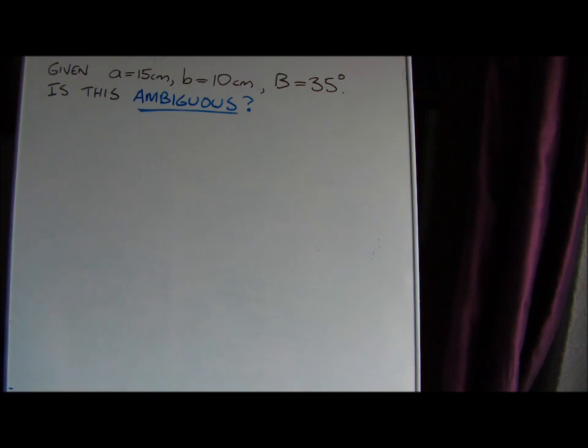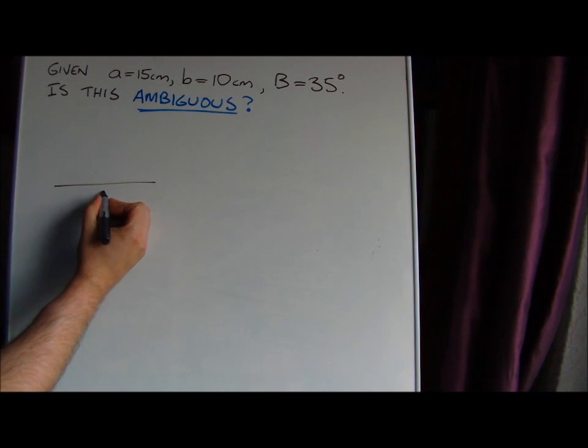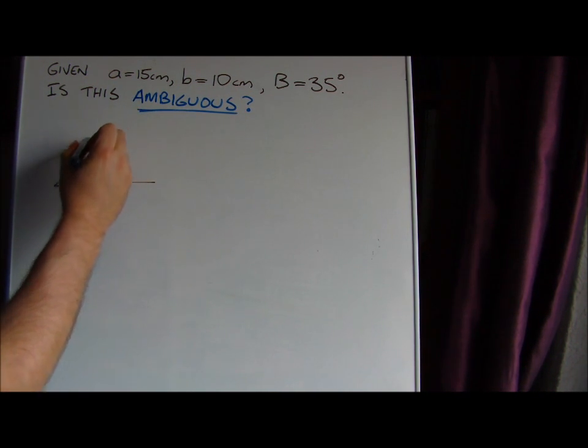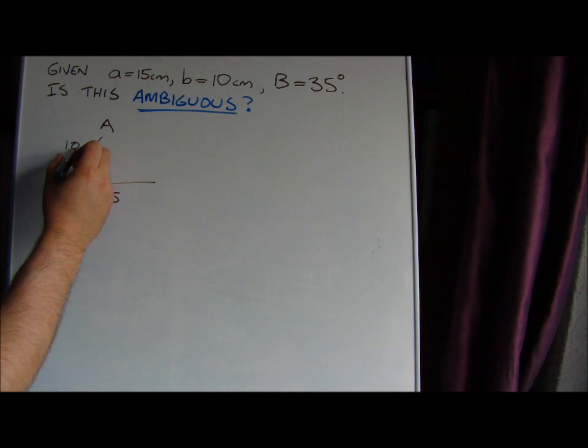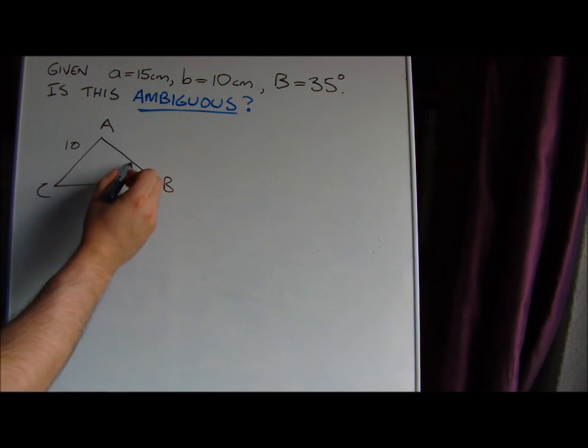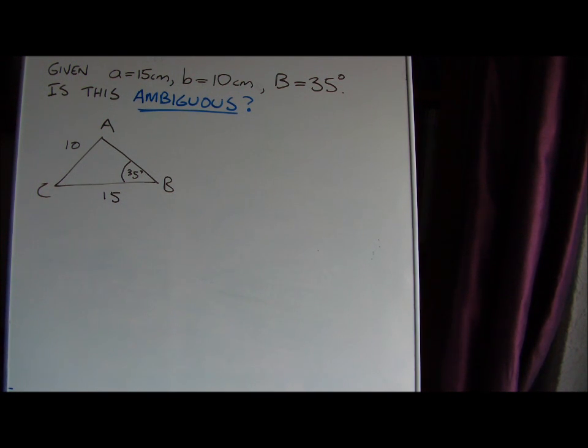There are some mathematical conditions that you can work through before you start a problem like this, but if you're in a hurry or it's an exam, it's probably easier just to calculate the missing angles and see if you can construct more than one triangle. We'll begin by making a sketch of the problem. So let's have this as the side with 15 centimeters opposite angle A, and 10 centimeters opposite angle B. This is 35 degrees.